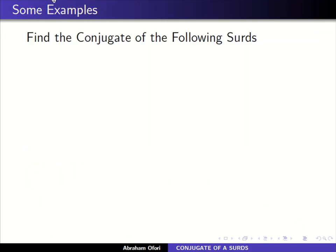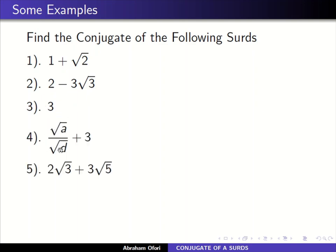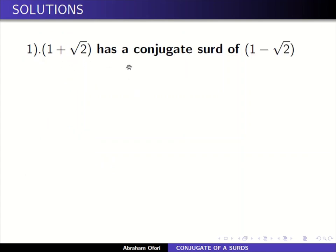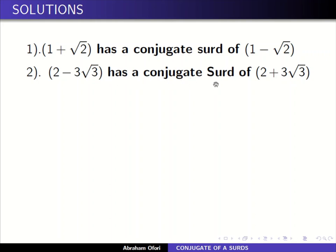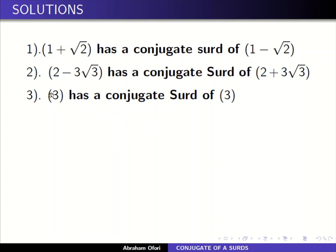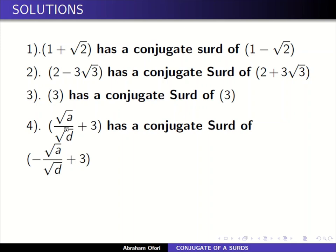Find the conjugate surd of the following: one plus square root of two, two minus three square root of three, square root of a over square root of d plus three, and two square root of three plus three square root of five. Solutions: one plus square root of two has a conjugate of one minus square root of two. Two minus three square root of three has a conjugate of two plus three square root of three. For the number three, since it is not a surd, it's like three plus square root of zero, and the conjugate is three minus square root of zero, which is just three.